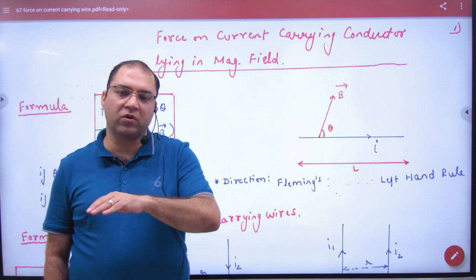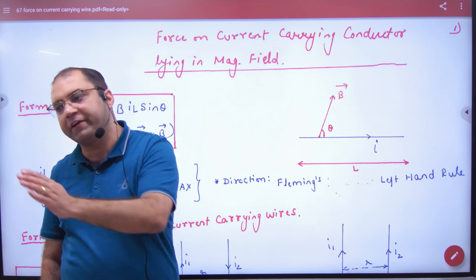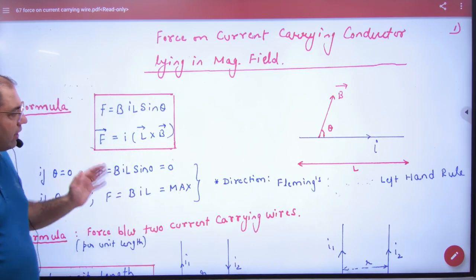First, we will find the force on one electron. Then, we will multiply by the number of electrons to get the net force. So the first result.